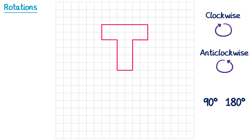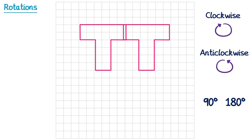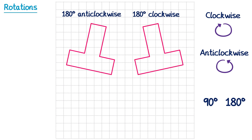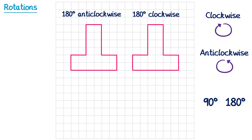For 180 degrees, we can actually look at both directions at the same time. So for the left shape we'll do 180 degrees anticlockwise, and the right one 180 degrees clockwise. Notice how both of these shapes end up in the same place. This means that when we rotate by 180 degrees, we don't actually need to give a direction at all — we can just say 180 degrees, and drop the clockwise or anticlockwise.